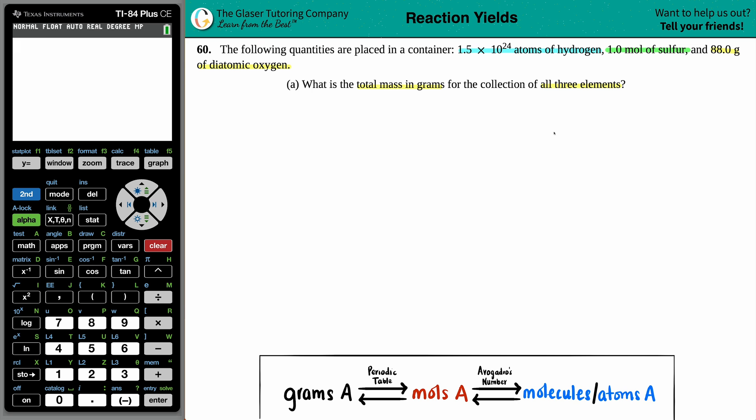Okay, so first off, let's just list out what we have. They told us that we had 1.5 times 10 to the 24th atoms of H. Then they told us that we had 1.0 moles of sulfur. And then we have 88.0 grams of diatomic oxygen. So diatomic means that you have two atoms. So di in chemistry means two, atomic means atoms. So we have 88.0 grams of O2.